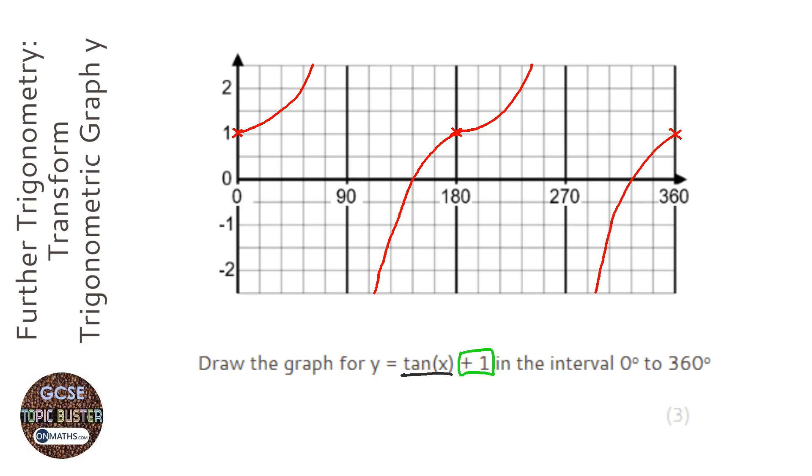So it's a normal tan graph wave, but we've just increased all the values by one, so it's just moved up by one. Let's go.